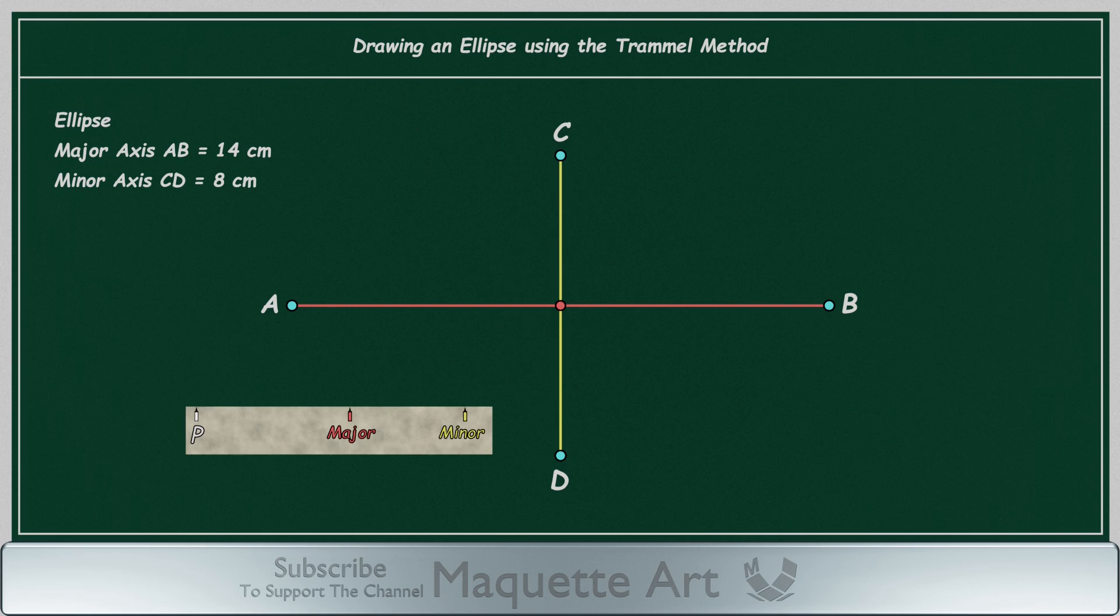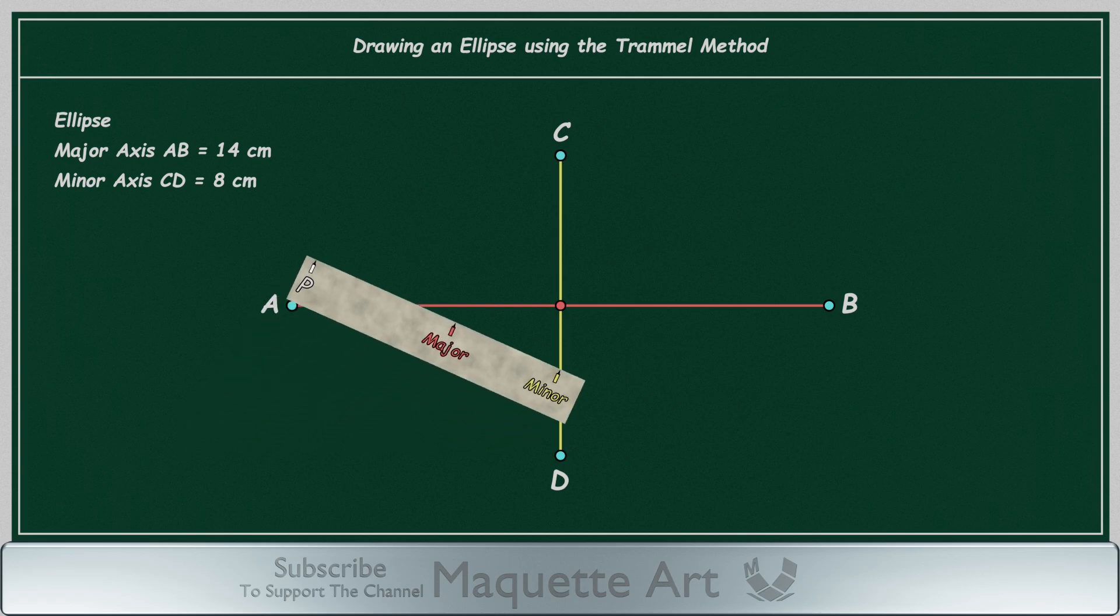Let's start using it. Using the trammel is very simple. All you have to do is align the point minor to the minor axis and the point major to the major axis. Then add a point at the mark P.